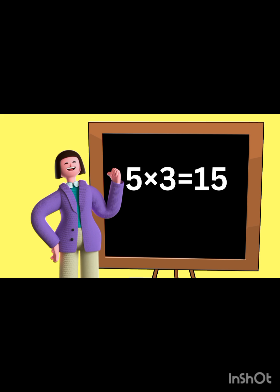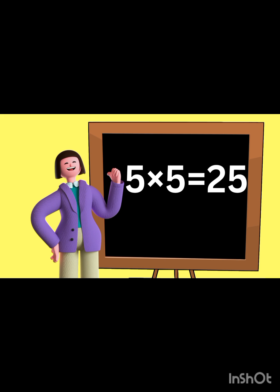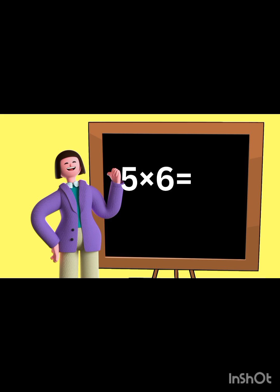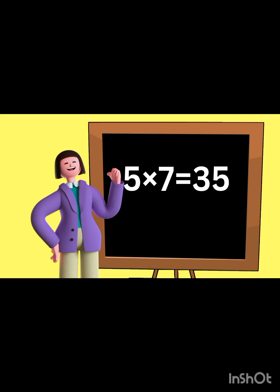Five threes are 15. Five threes are 15. Five fours are 20. Five fives are 25. Five fives are 25. Five sixes are 30. Five sixes are 30.